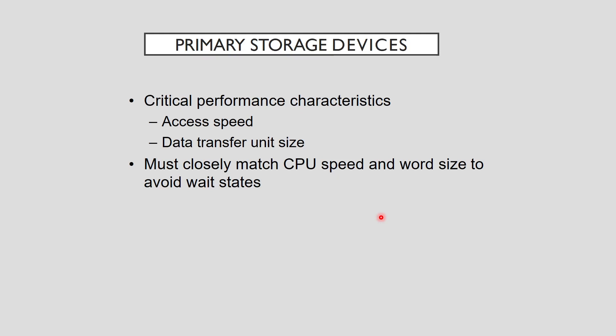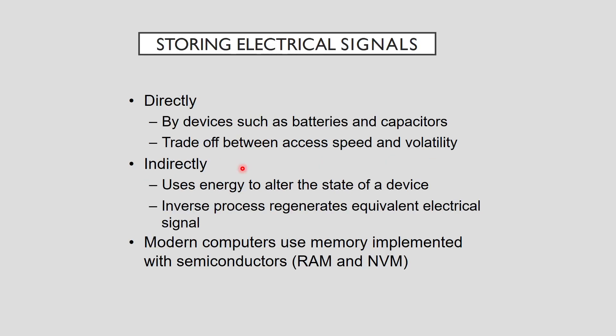The critical performance characteristics of primary storage devices are access speed and transfer unit size; primary storage devices must closely match CPU speed and word size. CPU and primary storage technologies have evolved in tandem — that is, CPU technologies are applied to constructing primary storage devices. Data in the CPU is represented as digital electrical signals, which are also the basis of data transmission for all devices attached to the system bus.